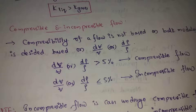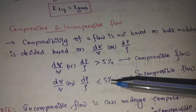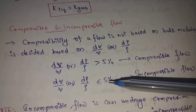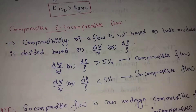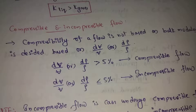A change in volume less than or equal to 5% is incompressible flow. Simply put, if the change is 5% or less, it is incompressible flow.